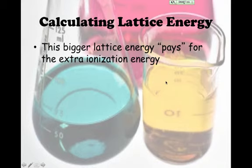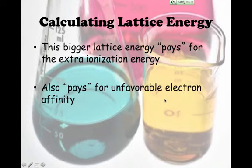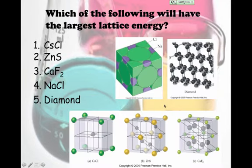So a bigger lattice energy is going to pay for any extra ionization energy it might take to remove three electrons as opposed to only removing one electron. It also would pay for some unfavorable electron affinity if you're trying to move electrons to a place where they wouldn't normally go.